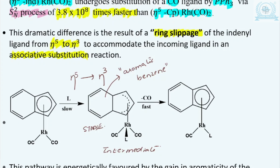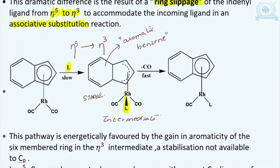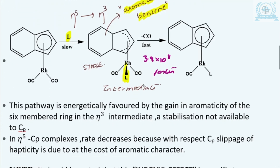Keep in mind that this must undergo through the associative substitution reaction. When substitution takes place, the incoming ligand coordinates first — that is the associative substitution. As a result, the aromatic benzene ring's aromaticity is still intact, and due to this aromaticity the stability of the intermediate is attained, resulting in a much faster rate — 3.8 × 10⁸ times faster as compared to the CP analog. This reaction is energetically favorable because there is a gain in aromaticity of the six-membered benzene ring in the η3 intermediate.